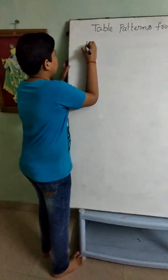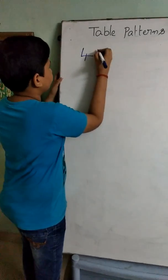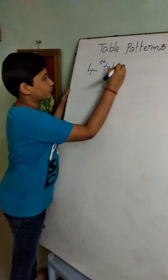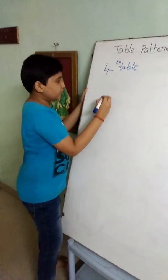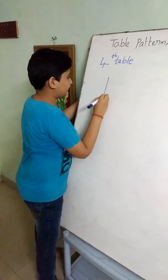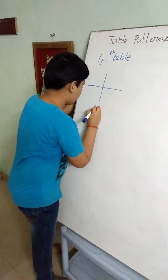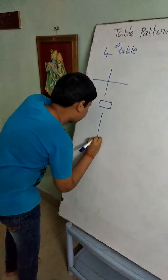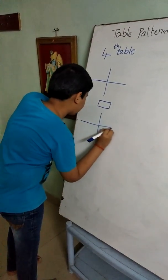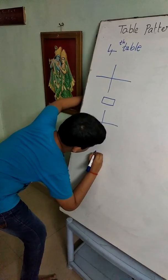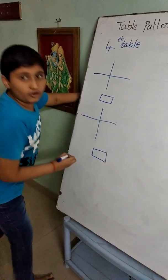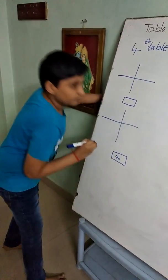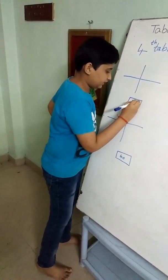We discuss the 4th table. Here we should keep 1 vertical line and 1 horizontal line and 1 box. And again we should keep 1 vertical line, 1 horizontal line and again 1 box. We know that 4 tens are 40, so we should write 40 here. And half of 40 is 20, so we should write 20 here.